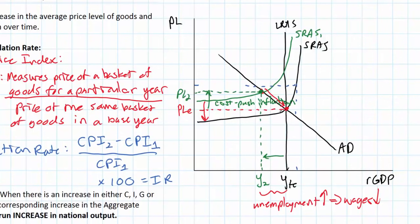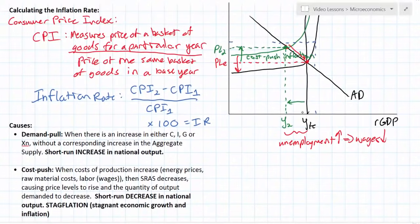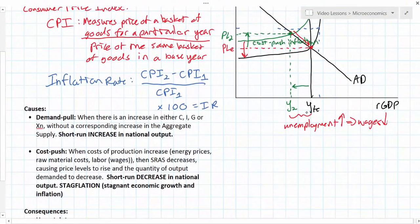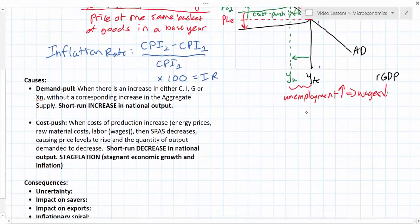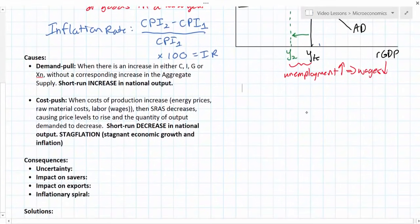So in this first part of the lesson, we have defined inflation, shown how it's calculated using the consumer price index, and distinguished between demand pull and cost push inflation. Graphically, these are shown as either an outward shift of aggregate demand with a movement along the SRAS curve, or an inward shift of aggregate supply with a movement along the aggregate demand curve. In the next video, we'll talk about the consequences of inflation — the winners and losers — and the different solutions the government has to try to reduce the inflation rate.